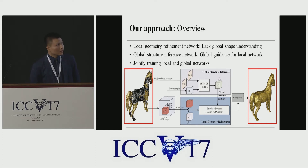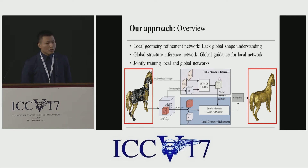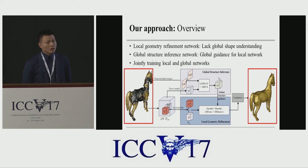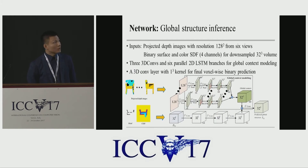Our network consists of two parts. The local geometry network infers local geometry, but it lacks global shape understanding. So we design another global network to infer the global course and predict a complete global structure as global guidance for the local network.